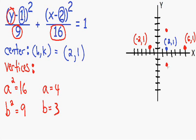Now we can find the actual coordinates of those vertices. For the vertex on the bottom, we go over 2 units and down 2 units, so that's the point (2, −2). For the vertex on the top, we go over 2 units and up 4 units, so that's the point (2, 4).